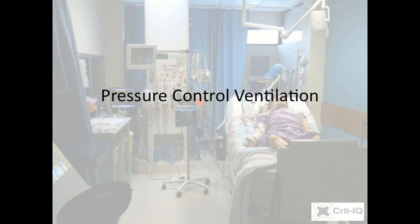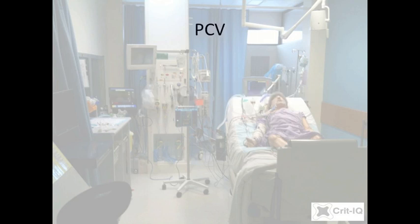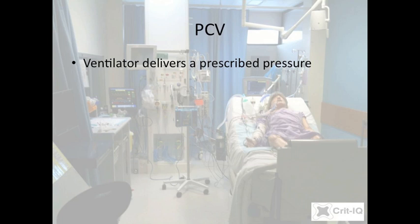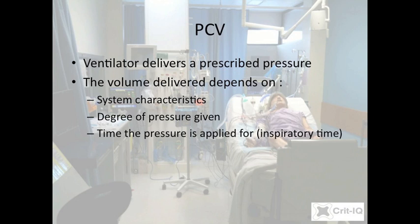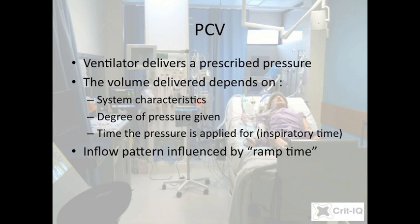Pressure control ventilation is very similar to CMV, differing in that instead of prescribing a specific volume, the ventilator delivers a specific pressure. The volume delivered is determined by the characteristics of the system, the degree of pressure set, and the time that the pressure is applied for. Similar to CMV, the pressure is applied for a specific inspiratory time, analogous to the IE ratio. The profile of inflow can be manipulated by adjusting the ramp time — the rate at which the ventilator achieves the set pressure — though in practice this is rarely adjusted.